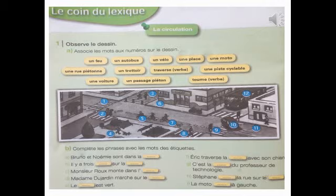Maintenant, phrase F : « Éric traverse la place avec son chien. » G : « C'est la voiture du professeur de technologie. » H : « Stéphane traverse la rue sur le passage piéton. » I : « La moto tourne à gauche. » On a complété toutes les phrases.